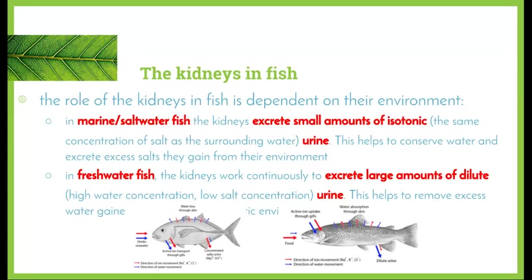The role of kidneys in fish is a lot more dependent on their environment than in mammals. Looking at marine or saltwater fish versus freshwater fish in more detail: in marine fish, the kidneys excrete small amounts of isotonic solution — the same concentration of salt as the surrounding water. Iso means same, hyper means more, hypo means less. This helps the fish conserve water and excrete excess salt gained from their environment.